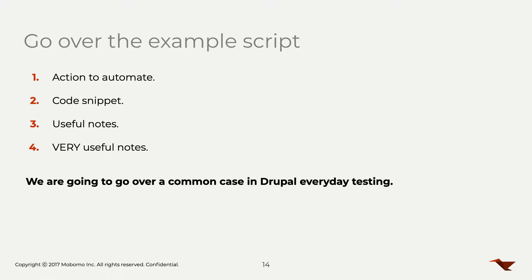We're going to showcase parts of an example script we're working on with one of our federal clients. It's a Drupal 7 website, but you can use all of these methods on Drupal 8 — it's still going to be relevant. We'll talk about the action we need to automate, show a code snippet, and then cover useful notes. Some steps will need more explanation than others. This is a common case in everyday Drupal testing.